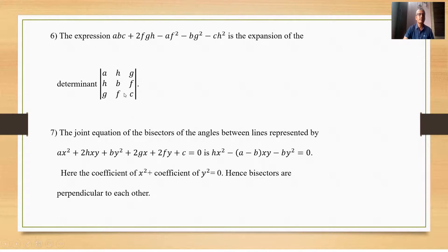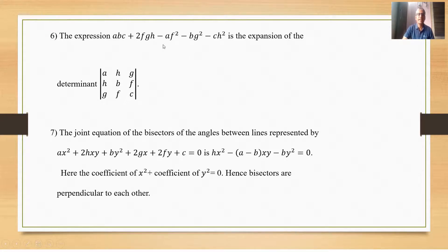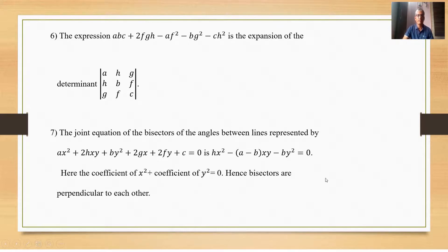The sixth remark: the expression abc + 2fgh − af² − bg² − ch² is the expansion of the determinant. The general second-degree equation represents a pair of lines when this determinant equals zero. The seventh remark: the joint equation of the bisectors of the angles between the lines gives coefficient of x² plus coefficient of y² = 0, hence the bisectors are perpendicular to each other.